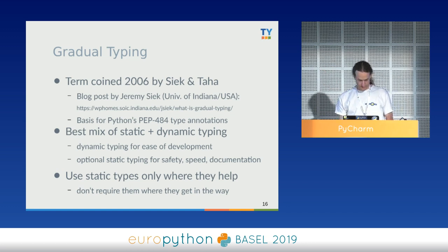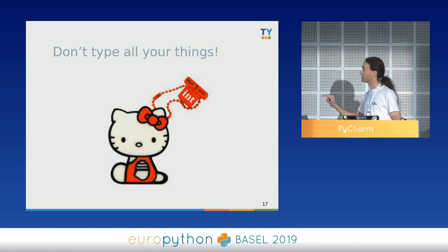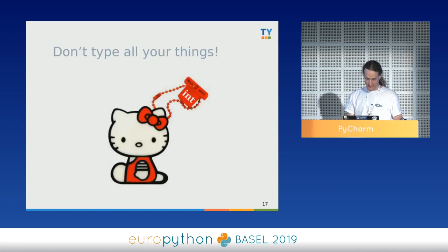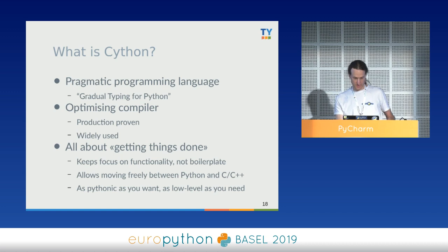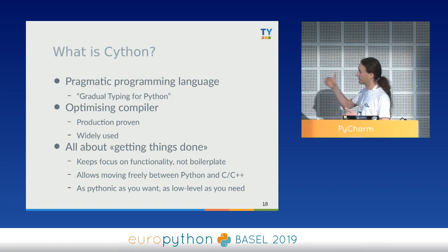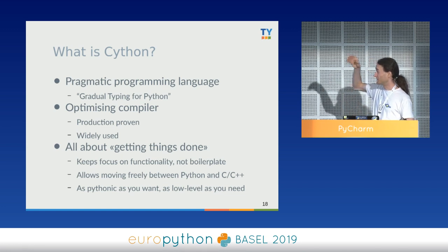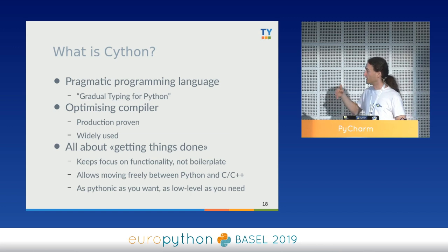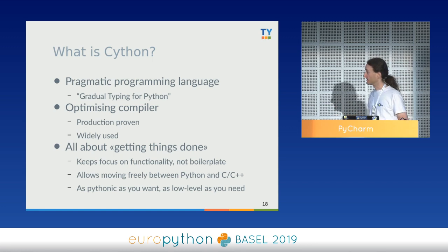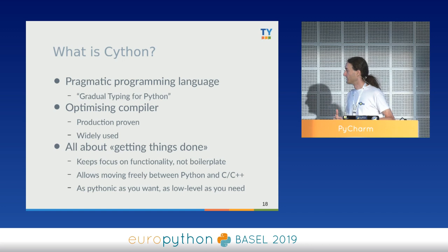The term was coined in 2006 and is the basis for PEP 484 type annotations in Python. It's really the best mix of static and dynamic typing — use dynamic typing for ease of development and optional static typing for safety, speed, and documentation, only where they help. Cython is a pragmatic programming language — gradual typing for Python and an optimizing compiler. It takes your Python code or type-annotated Python code, translates it to C, and compiles it into a native extension module you can import like any other binary module. It's production-proven, widely used, and all about getting things done — keeping focus on functionality while removing the boilerplate for writing native modules.